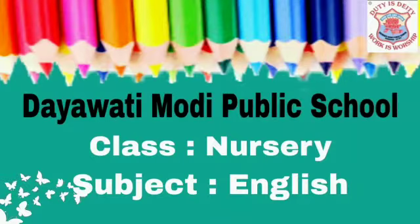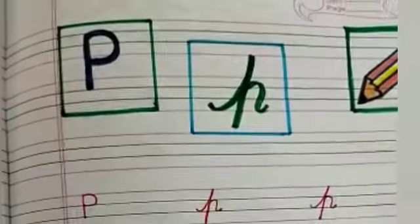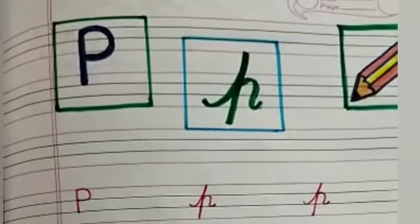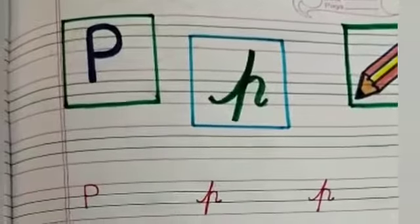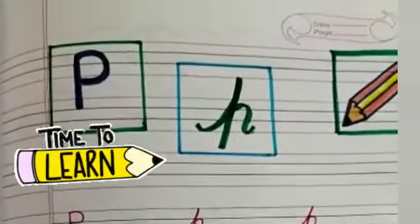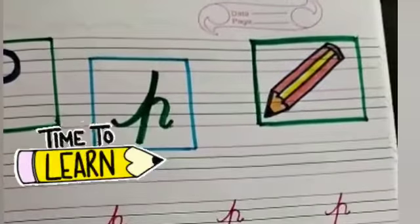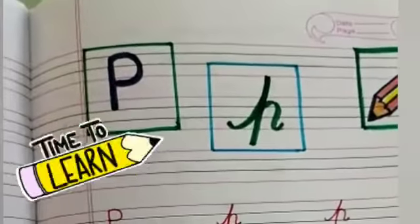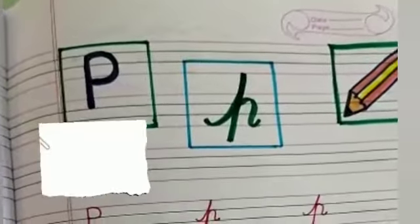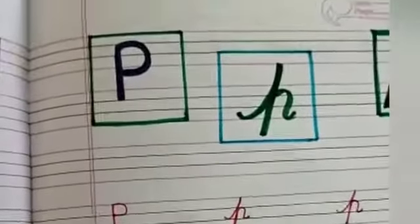Good morning kids, this is your English class and today we are going to learn how to write P, small p. P for pencil, p for pen, p for paper. So first for capital P.